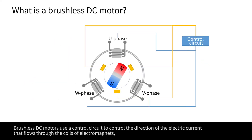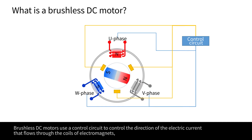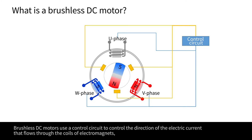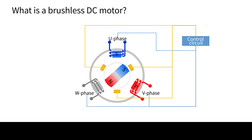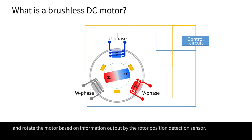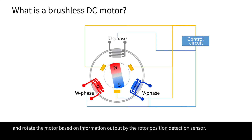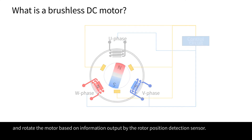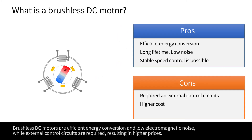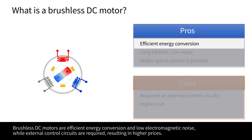Brushless DC motors use a control circuit to control the direction of the electric current that flows through the coils of electromagnets, and rotate the motor based on information output by the rotor position detection sensor.